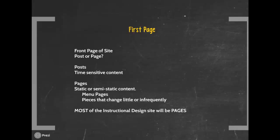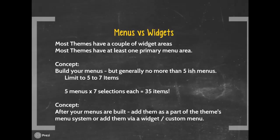Most of the instructional design site for this course will be pages. So unless you're directed specifically to do a post, please assume it would be a page. Most themes have a couple of widget areas. Most themes also have at least one primary menu area. Theme developers sell their themes or give them out as unique pieces, so some will have multiple options for customization and multiple options for menus. Part of the work in learning WordPress is to learn what options are available in your particular theme.